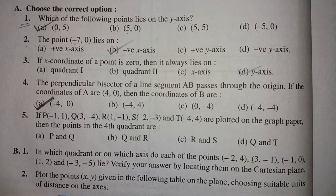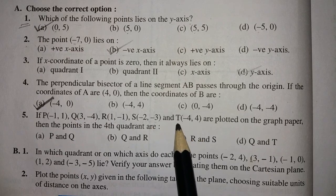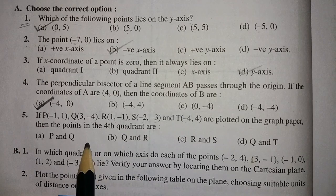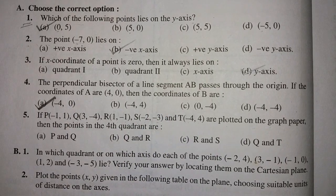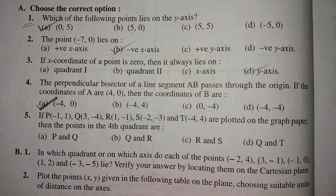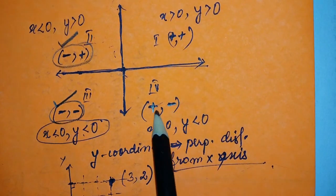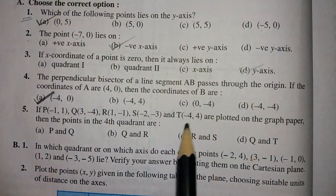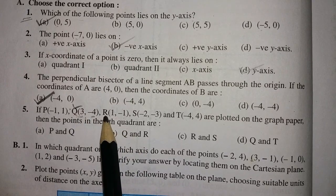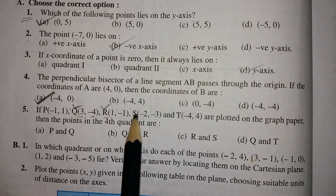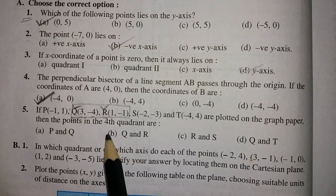Question 5: points P(-1,1), Q(3,-4), R(1,-1), S(-2,-3), and T(-4,4) are plotted on graph paper. Which points lie in the fourth quadrant? The fourth quadrant has signs (+, -): X positive and Y negative. Checking: Q is (3,-4) — plus, minus ✓; R is (1,-1) — plus, minus ✓. So Q and R lie in the fourth quadrant. The answer is B.